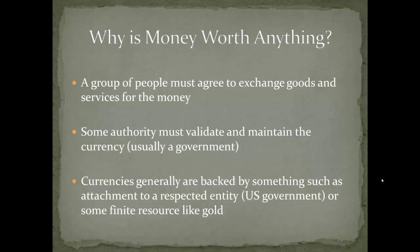Currencies tend to be backed by something — such as the respect of the entity that backs it. We trust the Federal Reserve System for the most part, though we'll get to that later. Currencies can also be backed by finite resources like gold or silver, or by services guaranteed by a government or issuing agency. In a nutshell: money is worth something because we agree to exchange goods and services for it, some authority validates and maintains it, and currencies are backed by either respect — called a fiat currency — or a resource like gold.